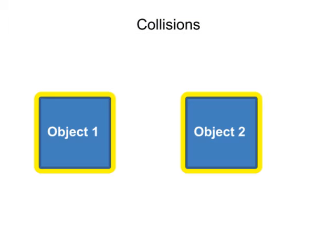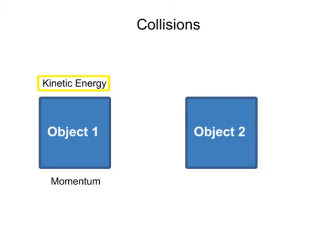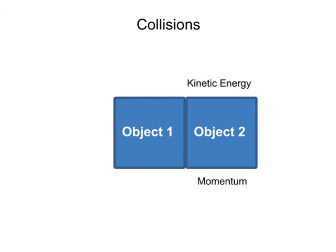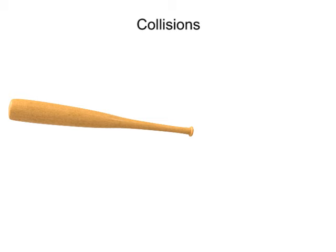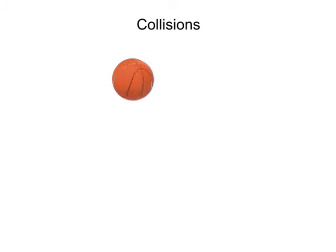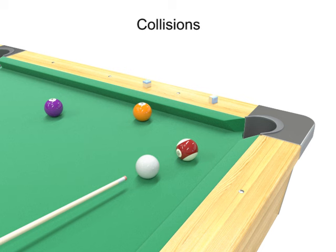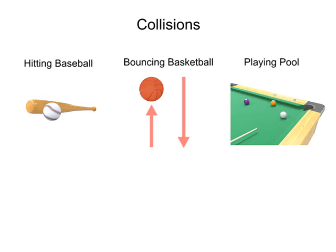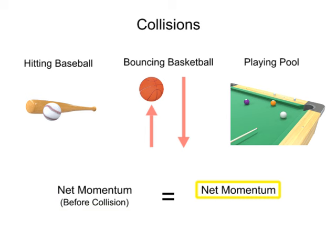Collisions happen when two or more objects come into contact with each other and a transfer of momentum and kinetic energy occurs. When objects collide in the absence of external forces, they form a system in which the net momentum of both objects before the collision equals the net momentum of both objects after the collision.